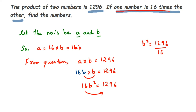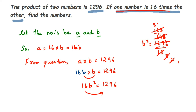You can directly divide 1296 by 16, or cancel step by step. Dividing 1296 by 16: 16 goes into 128 eight times with remainder, continuing the division gives us 81. So b² equals 81.